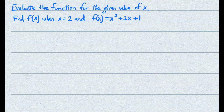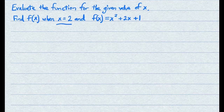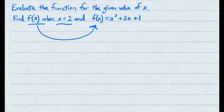There are a few ways that you'll see this kind of question. One of them is that you'll be asked to evaluate the function for the given value of x. Another way is that you'll be given a value, in this case x equals 2, and you'll be told what f of x equals. So here f of x equals x squared plus 2x plus 1.